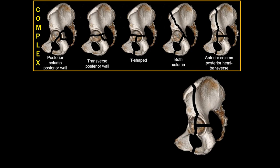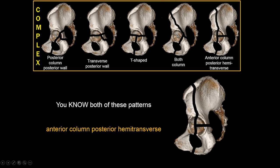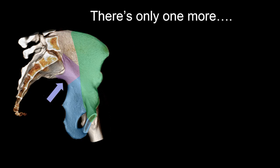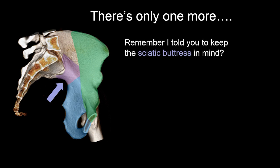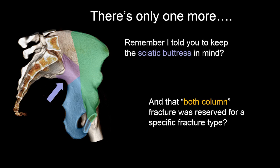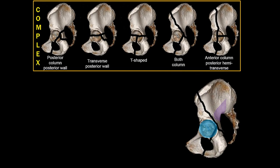The longest-named fracture type is the anterior column posterior hemitransverse. It tends to scare people, but you're already familiar with both patterns: a fracture coming from the iliac wing going down through the acetabulum involving the quadrilateral plate is an anterior column fracture, and you know how to identify the transverse component on coronal images. Put them together and you get an anterior column posterior hemitransverse. And remember to keep the sciatic buttress in mind — the both-column fracture name is reserved for a very specific fracture type under Judet-Letournel.